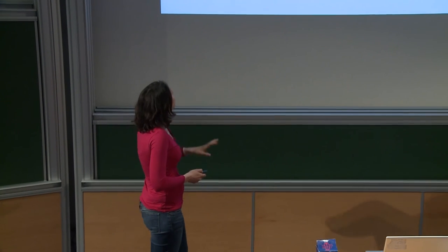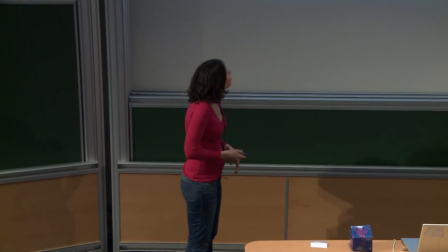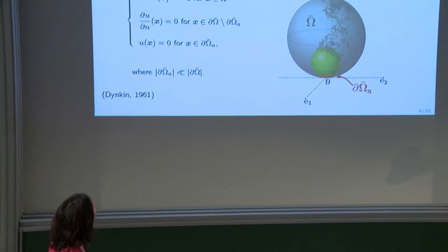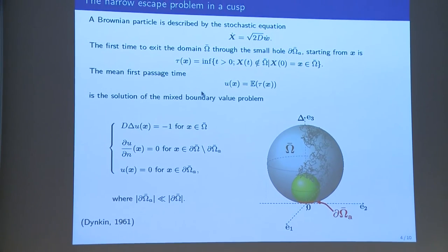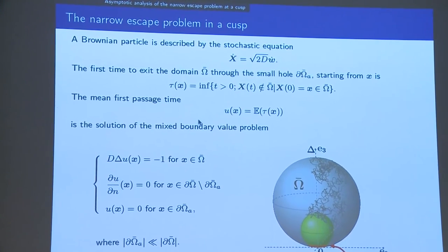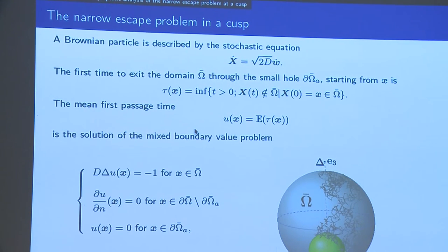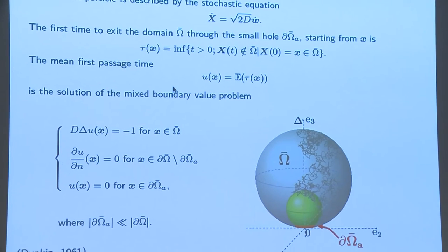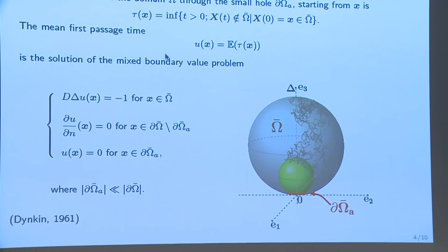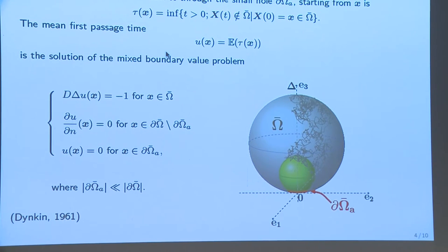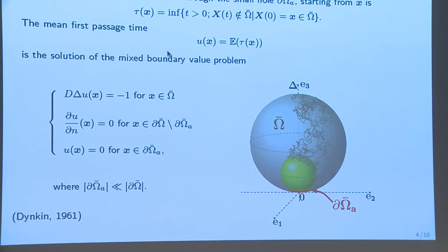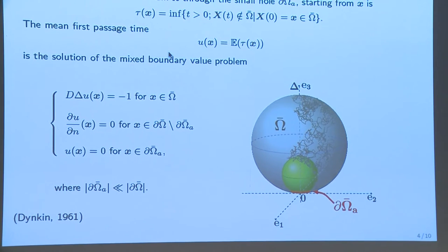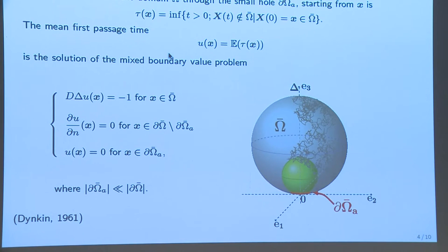The narrow escape problem is as follows: a Brownian particle is described by a stochastic equation, x-dot equals square root of 2D times w-dot, where D is the diffusion coefficient and w-dot is white noise. The first time to exit the domain omega-bar through the small hole in red — the cylinder in red — is the quantity of interest. The particle is reflected everywhere on the border of the domain except at the red cylinder, where it is absorbed.